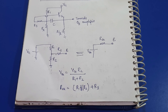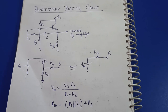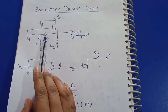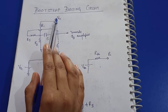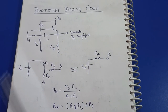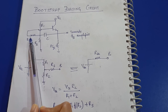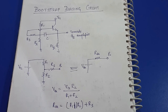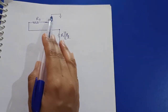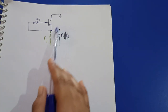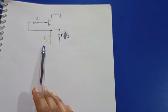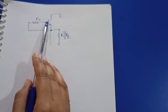Now let's do the AC analysis of the bootstrap biasing circuit. In AC analysis, the capacitor is replaced with a short circuit and the VCC node is grounded. Thus R1 and R2 appear in parallel between emitter and ground, whereas R3 appears between base and emitter. In the redrawn circuit, R1 and R2 are in parallel with the emitter resistance, and R3 is between base and emitter.